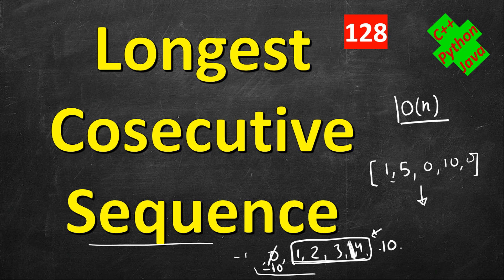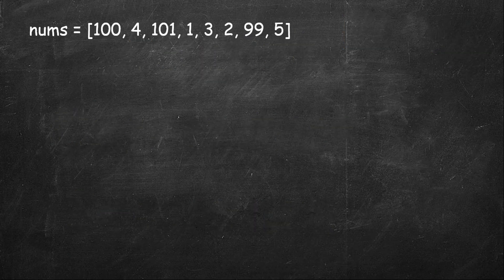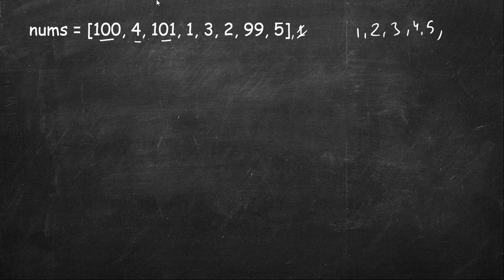Let's take an example array: 100, 4, 100, 1, 3, 1, 2, 99, 5 in any order. One simple approach that would come to mind is to sort the array — you would get 1, 2, 3, 4, 5, then 99, 100, 101 — and then iterate through it.